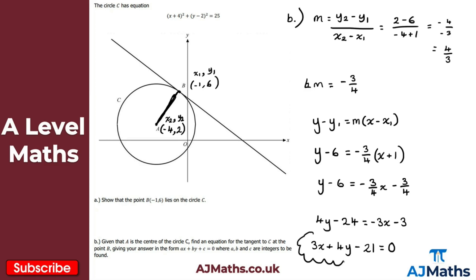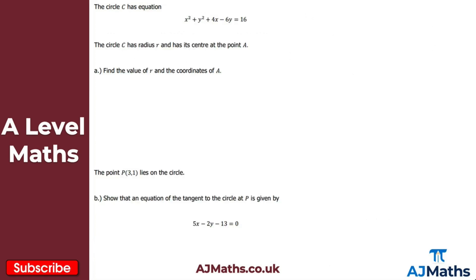That's the solution to the first question. Let's take a look at one more question to finish with. We have circle C with this equation, and we're told the circle has radius r and its center is at point A.